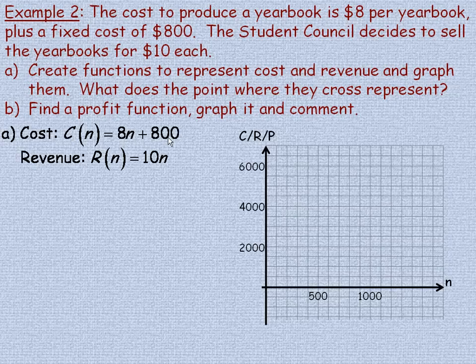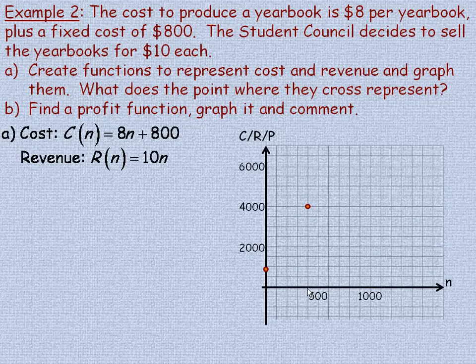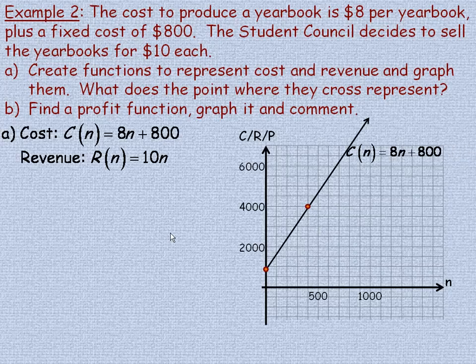To graph C(N) = 8N + 800, the fixed cost is 800. On this graph the scale is 500 per block, so 800 is a little bit below 1,000 — we put a dot there. For the variable cost, plotting a point: if we sell 400 yearbooks, 8 times 400 is 3,200, plus 800 more makes 4,000. So the cost for 400 yearbooks is 4,000. We draw a straight line through those points — that's the cost function.